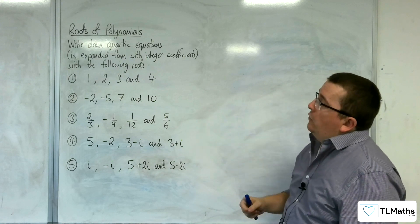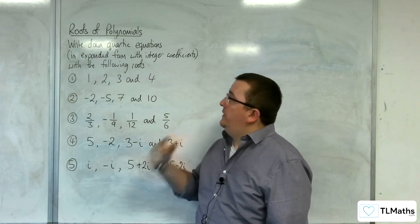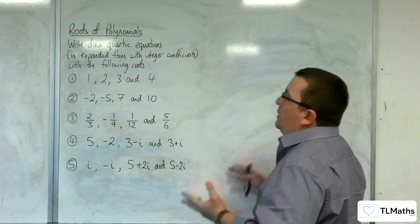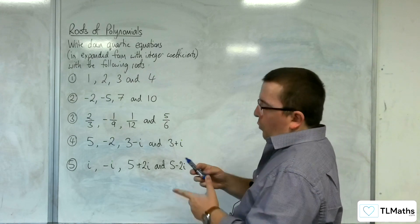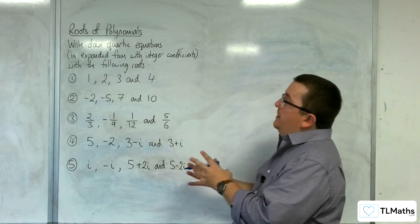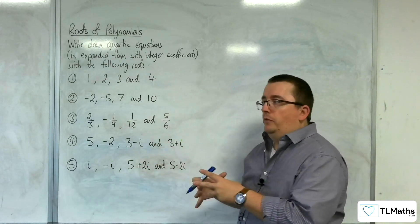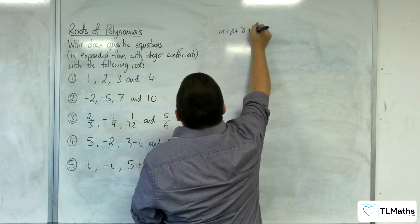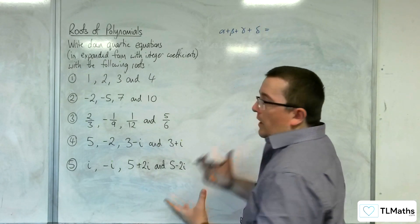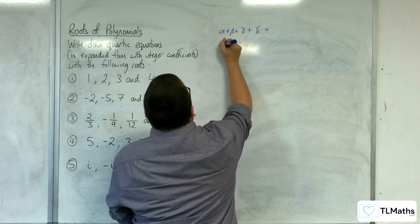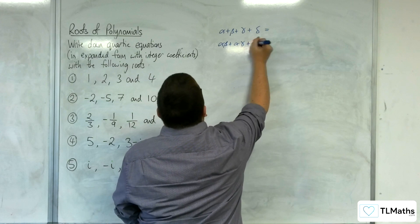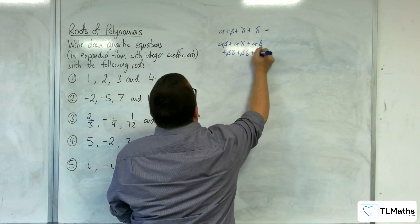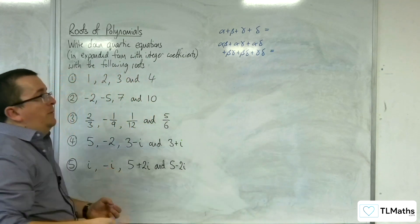In this video, we need to write down quartic equations in expanded form with integer coefficients, given the following roots. What we want to do first is make sure that we can write down what the coefficients are going to be using sums of roots. So we're going to have alpha plus beta plus gamma plus delta — the sum of the roots. We're also going to have alpha beta plus alpha gamma plus alpha delta plus beta gamma plus beta delta plus gamma delta — the sum of the product pairs.